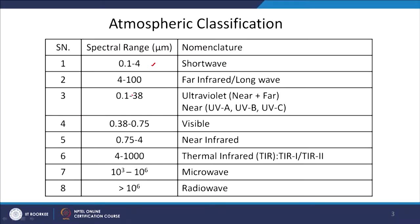The 4 to 100 micron region is called the long wave or far infrared region. Going into further division of the spectral region, 0.1 to 0.38 micron is a spectral region called ultraviolet. We have near ultraviolet and far ultraviolet regions.